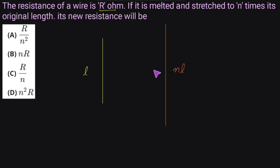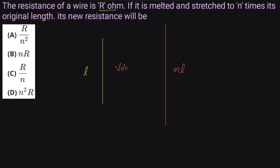Definitely, when we stretch the wire, its thickness or the area of cross-section will reduce, because we are using the same material — the same amount of material. So in both cases, what will remain constant is the volume.